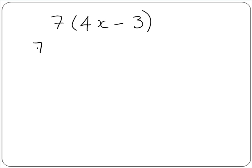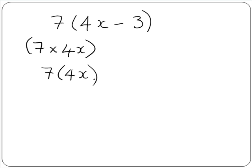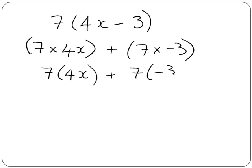We can write 7 by 4x, or similarly write 7 by minus 3 in a shorter form. So 7 by 4x gives us 28x, and 7 by minus 3 gives us minus 21. Again, we can't simplify this anymore because they are unlike terms.